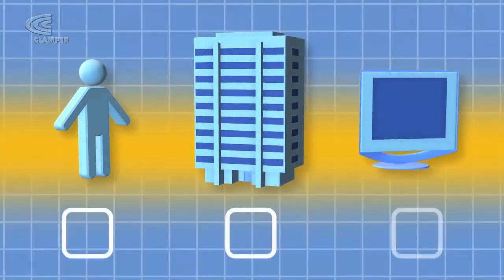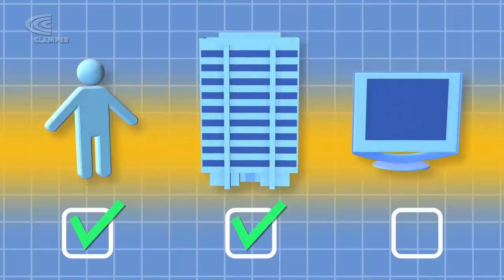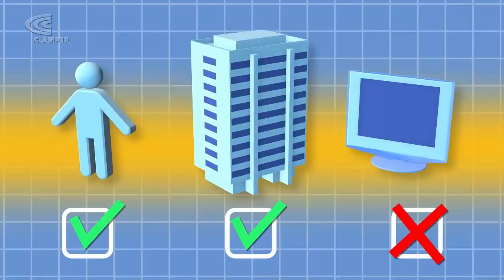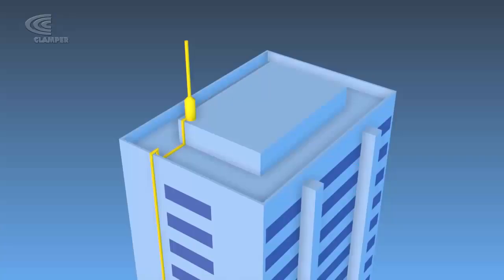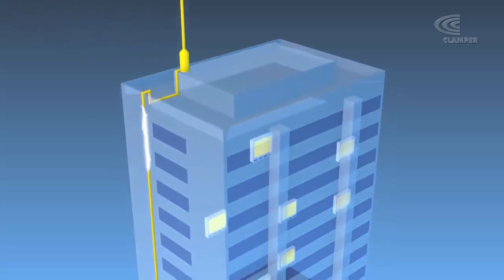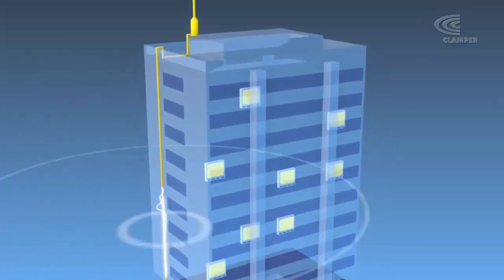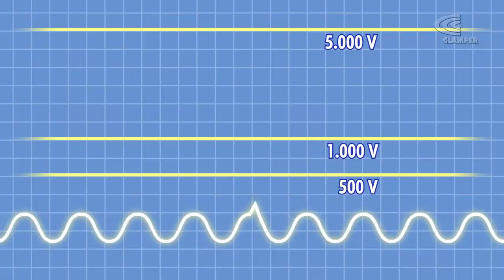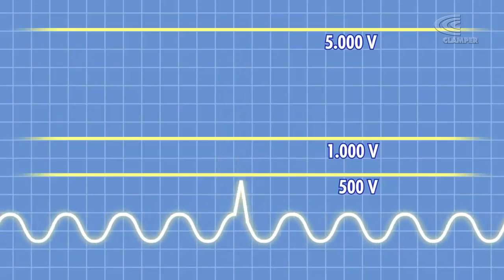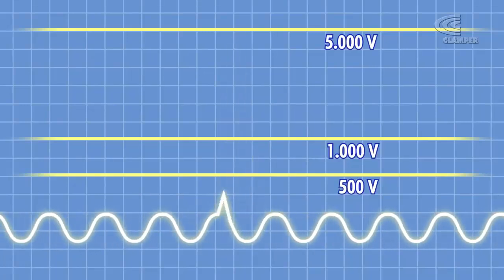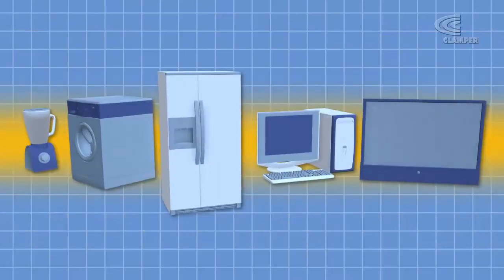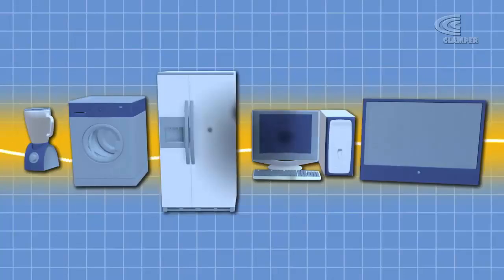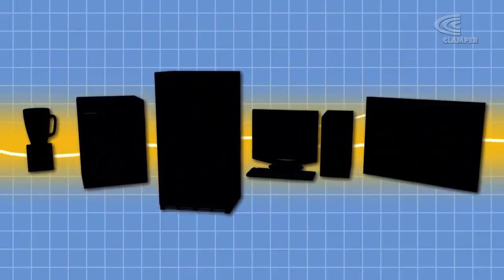Em prédio com para-raios, as pessoas e o edifício estão livres dos danos, mas seus bens eletrônicos e eletrodomésticos correm ainda mais perigo. Isso ocorre porque, quando o raio é levado para o solo, ele gera uma onda eletromagnética que gera surtos elétricos. Quando um surto elétrico causado por um raio acontece, a tensão da rede pode se elevar a mais de 5.000 volts, queimando instantaneamente os equipamentos sem a correta proteção.